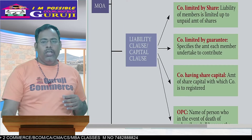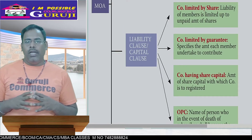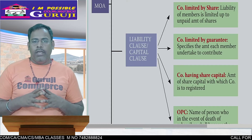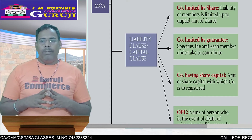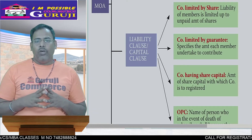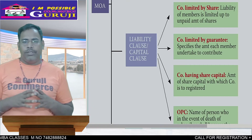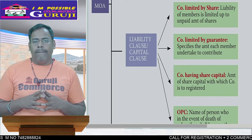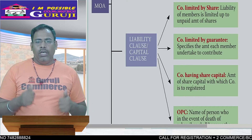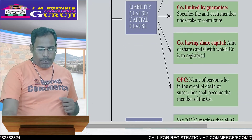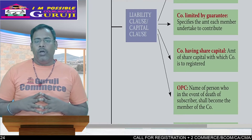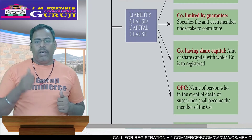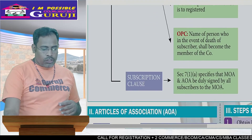Next, Liability clause. Company limited by share: member is limited up to the unpaid amount of share. Company limited by guarantee means a specific amount the member is liable for contribution. No company having share capital means the amount of share capital which the company is registered with. And OCP company means the number of persons — in the event, each subscriber shall become the member of the company. This is the liability clause.